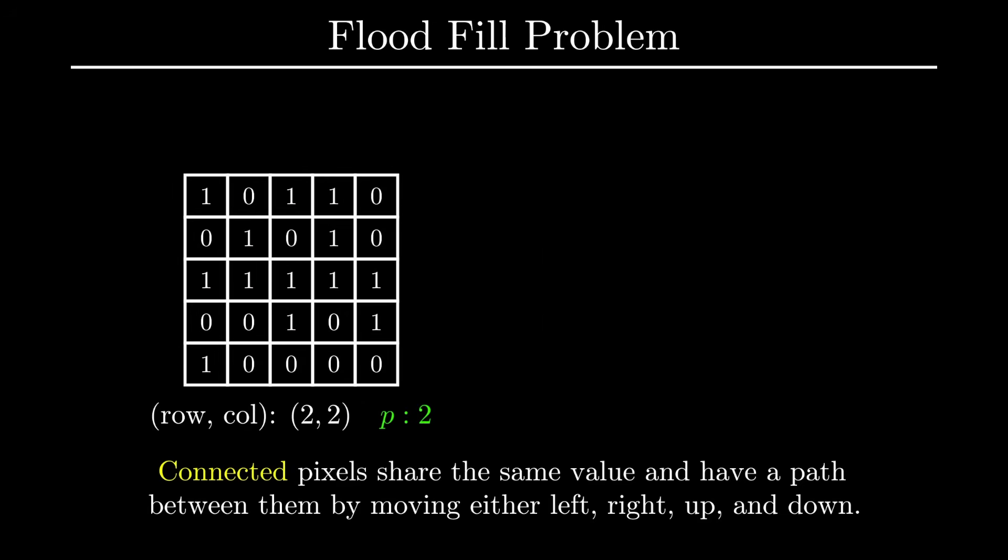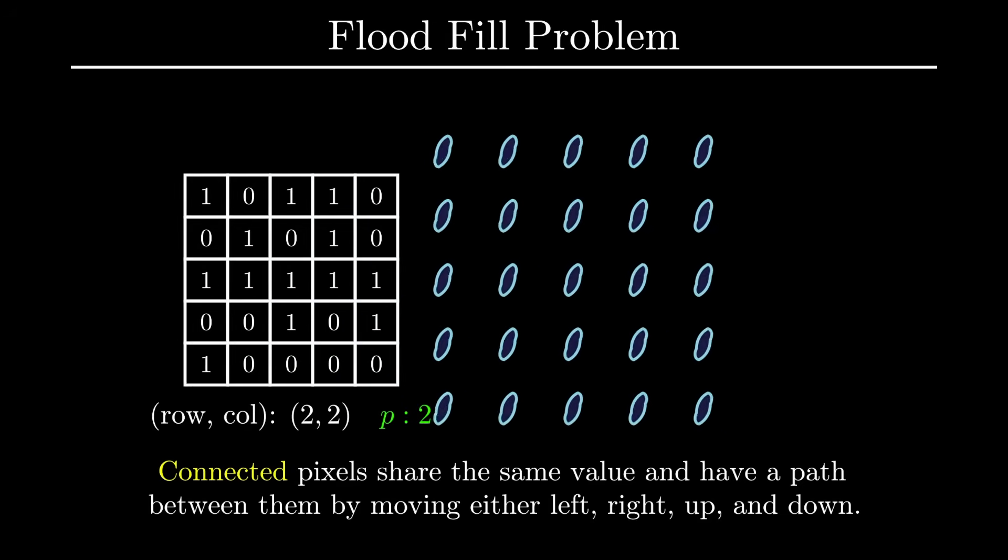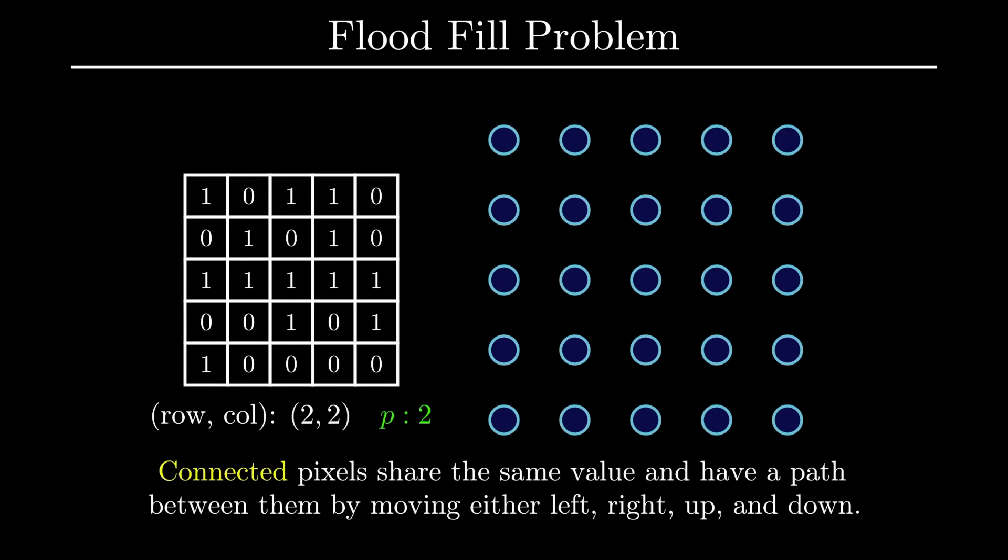Suppose each pixel in this grid is represented by a vertex and we take the idea of connected pixels literally and connect an edge between the two corresponding vertices. This is what the resulting graph looks like.